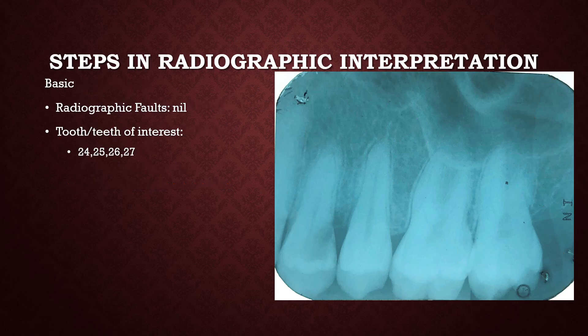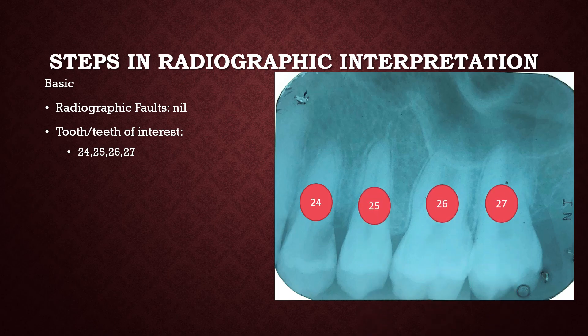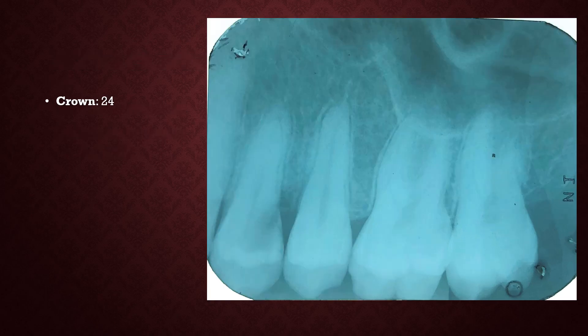Moving on to identifying the faults: in this particular radiograph, I don't really see many faults except for a few scratch marks. Otherwise it looks good enough. The teeth look in well proportion. The teeth of interest are 2-4, 2-5, 2-6, and 2-7 — that is the second premolar, first molar, and second molar.